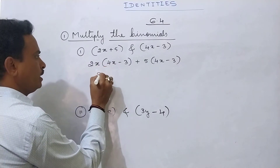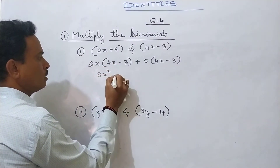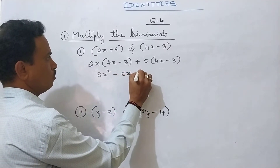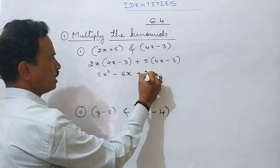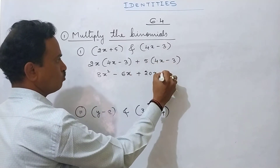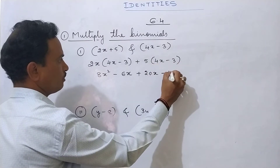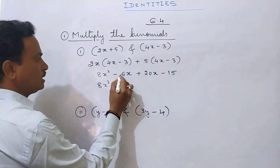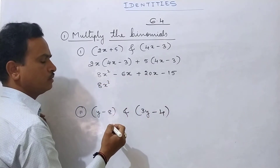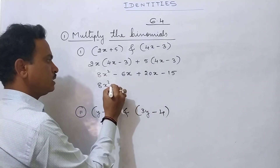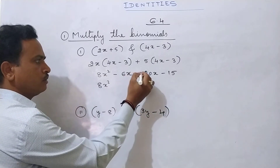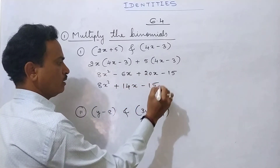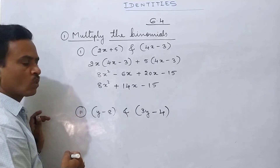2 times 4 is 8, x times x becomes x squared, minus 2 times 3 is 6, so minus 6x, plus 5 times 4 is 20x, plus into minus gives minus 5 times 3 is 15. Now 8x² minus 6x plus 20x: subtract 20 minus 6 equals 14, biggest number sign is plus, so plus 14x, minus 15. This is the first answer.